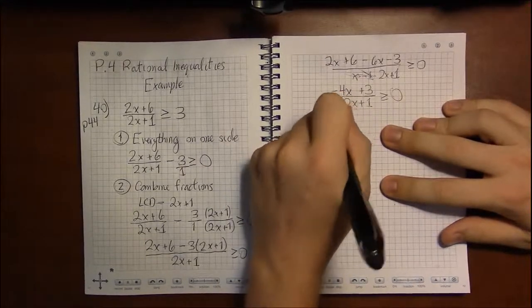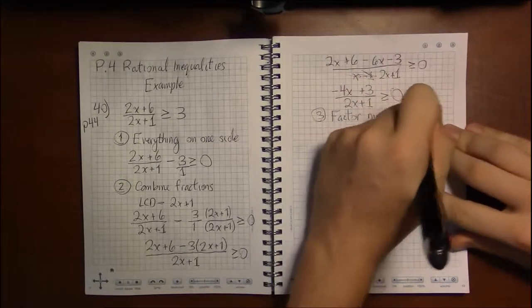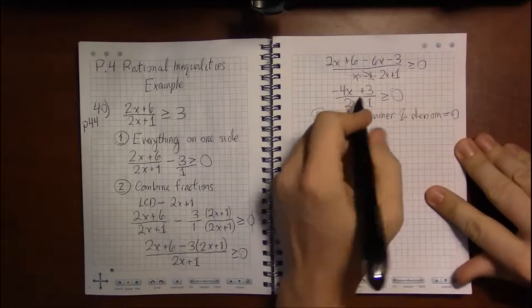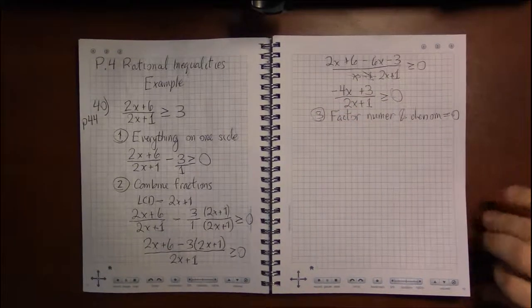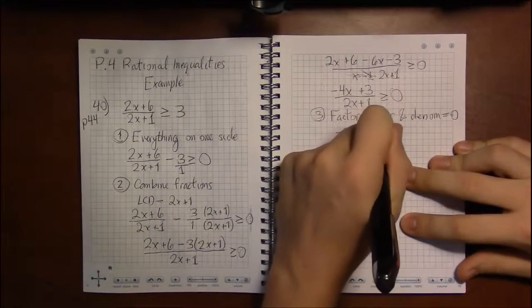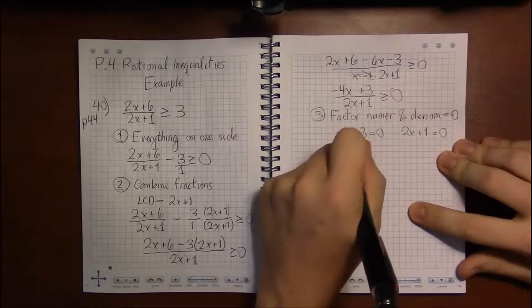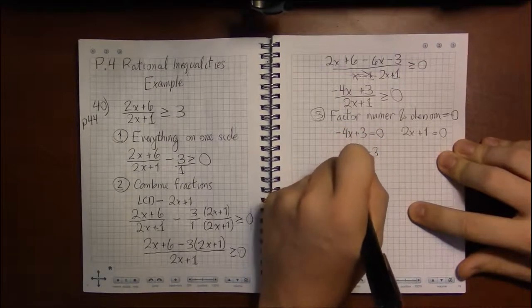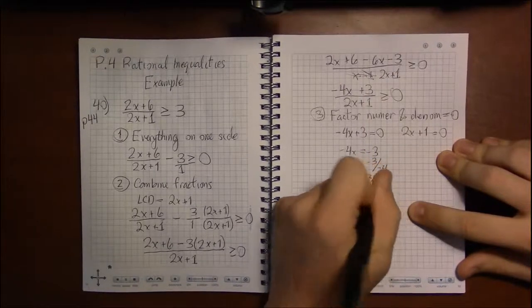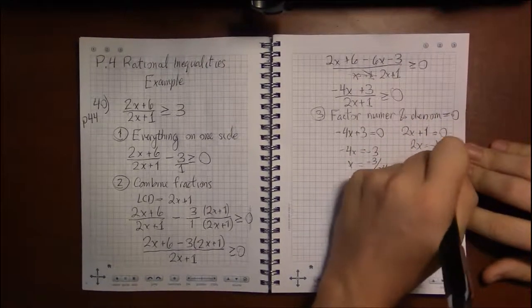So, we're going to factor the numerator and denominator as much as we possibly can, which in this case requires absolutely no work, because these two are about as factored as you can get. So, we're going to do minus 4x plus 3 equals 0. 2x plus 1 equals 0. Let's see. This is going to be minus 4x is minus 3. So, x is minus 3 over minus 4. So, x is 3 quarters. 2x is minus 1. x is minus 1 half.